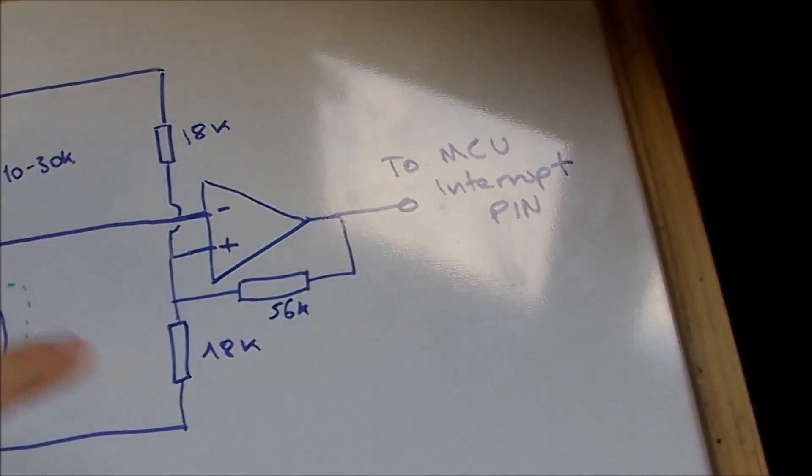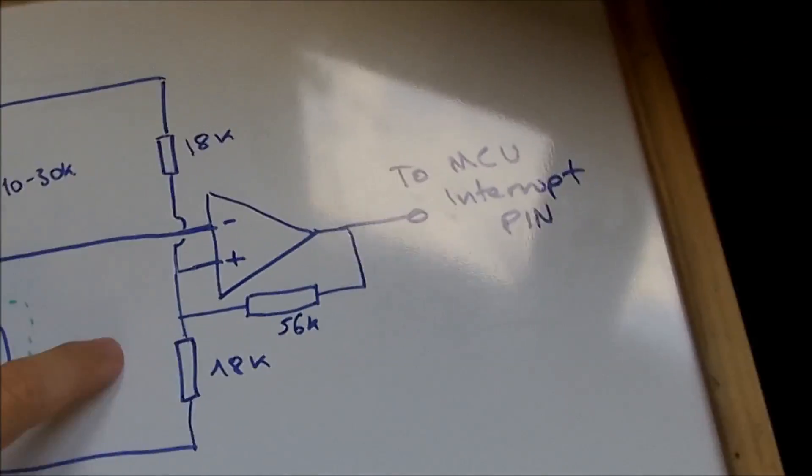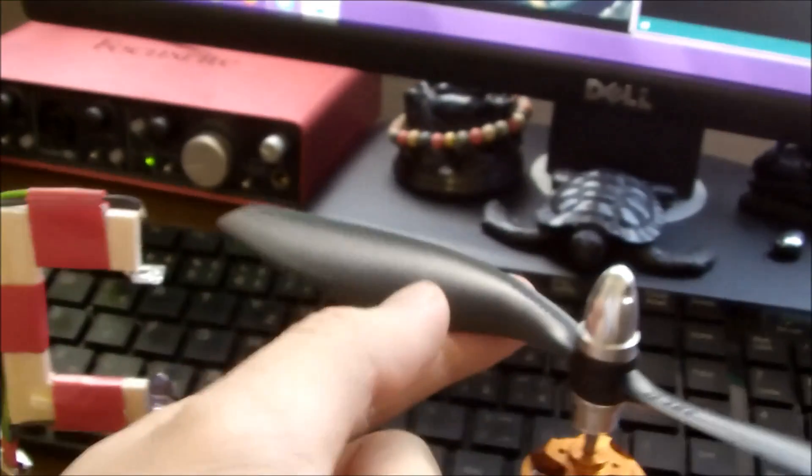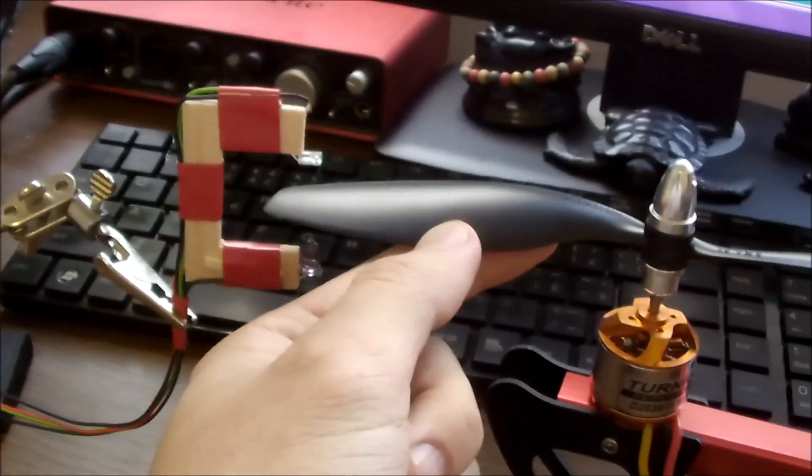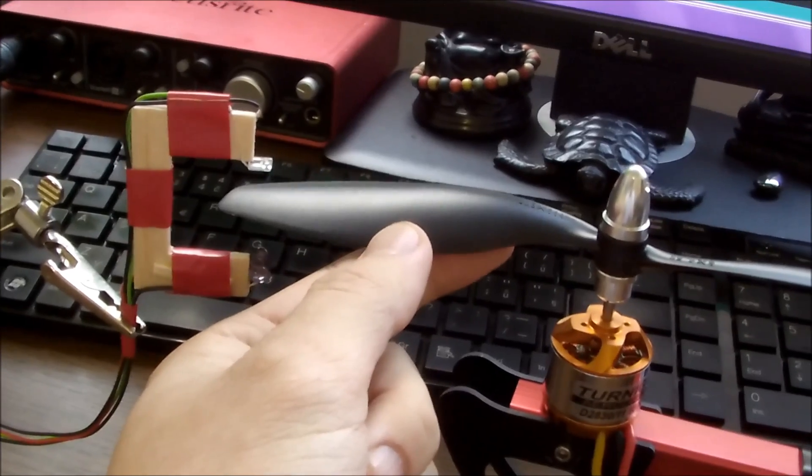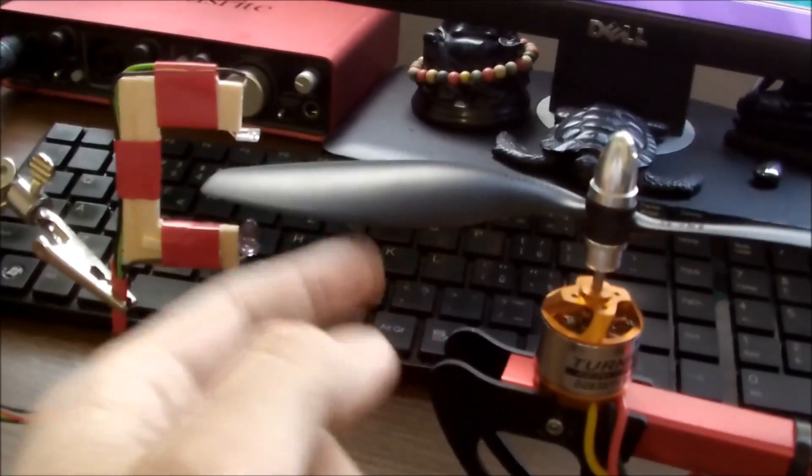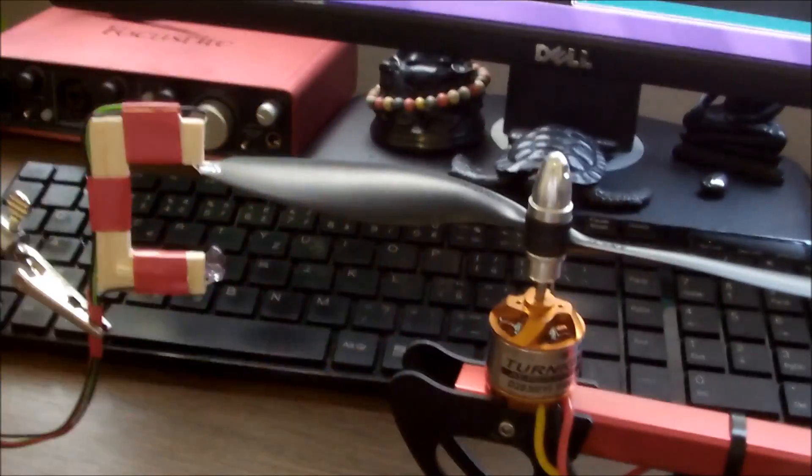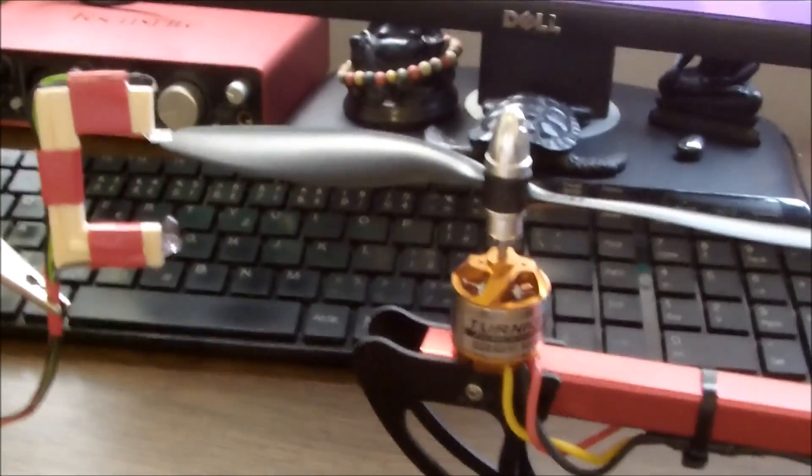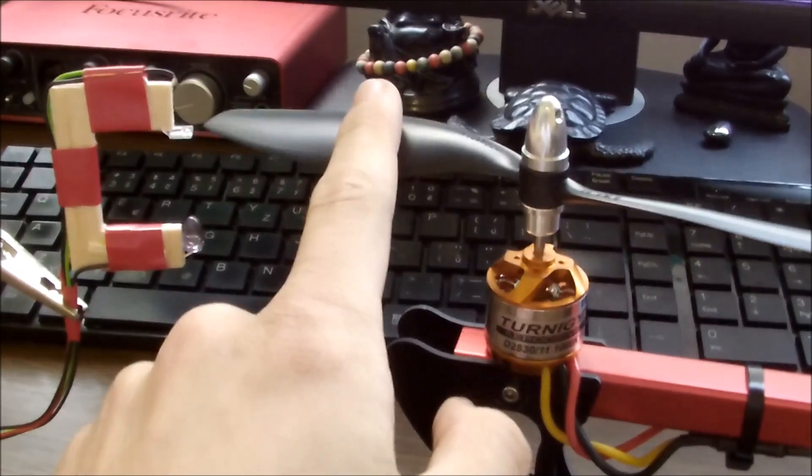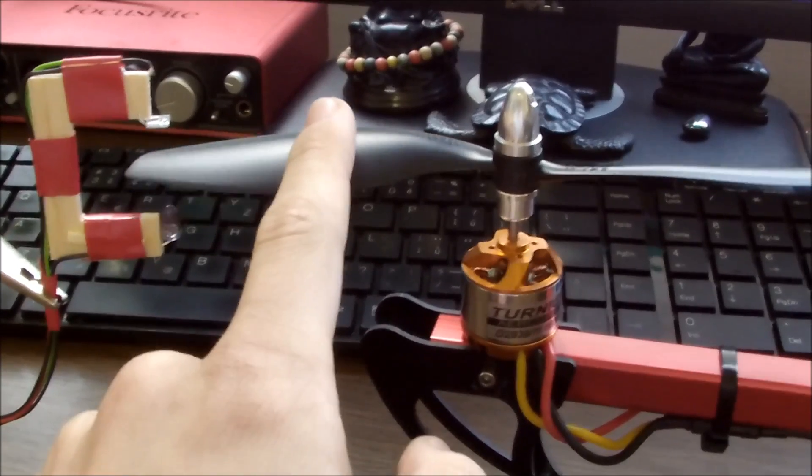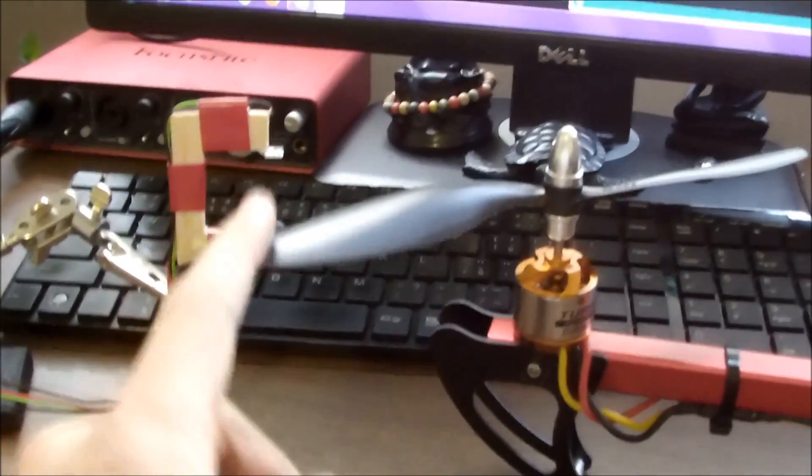But the tricky part here is the Schmidt trigger without which this system won't work because if you just connect the out with the microcontroller, the issue here is that when the blade is just about to pass or just about to block the light path, any noise, any light noise might generate a false reading. So basically might get double, triple, maybe like five readings every time the propeller passes through, which will give you completely wrong results.